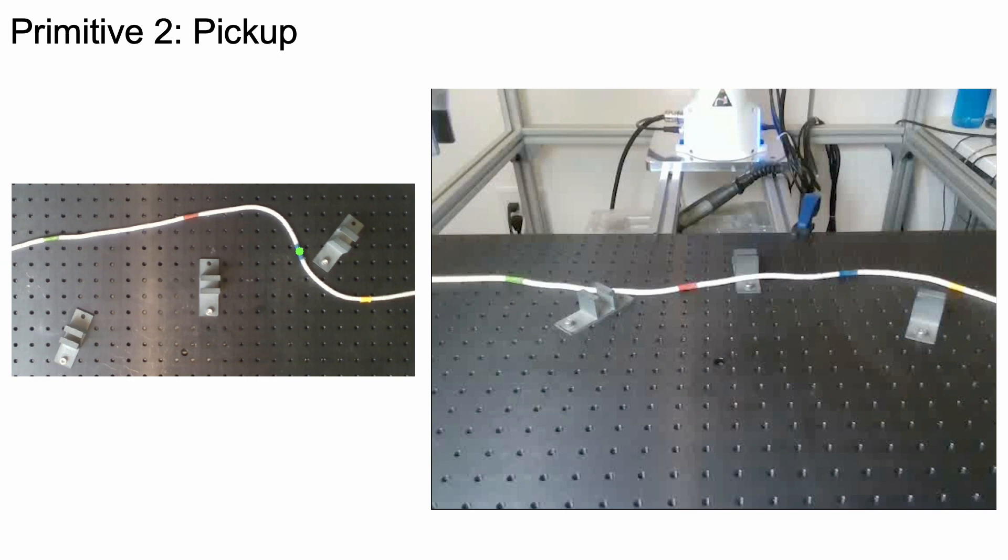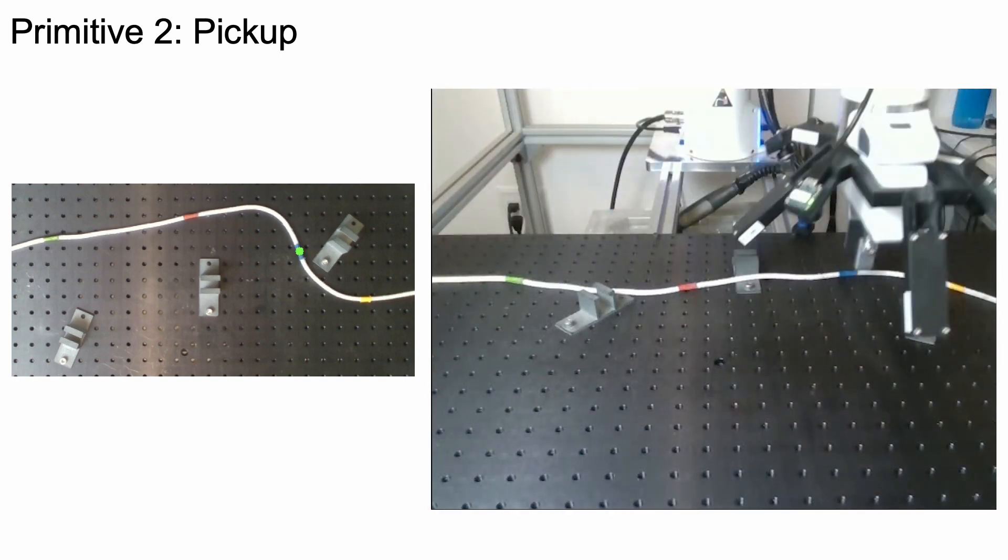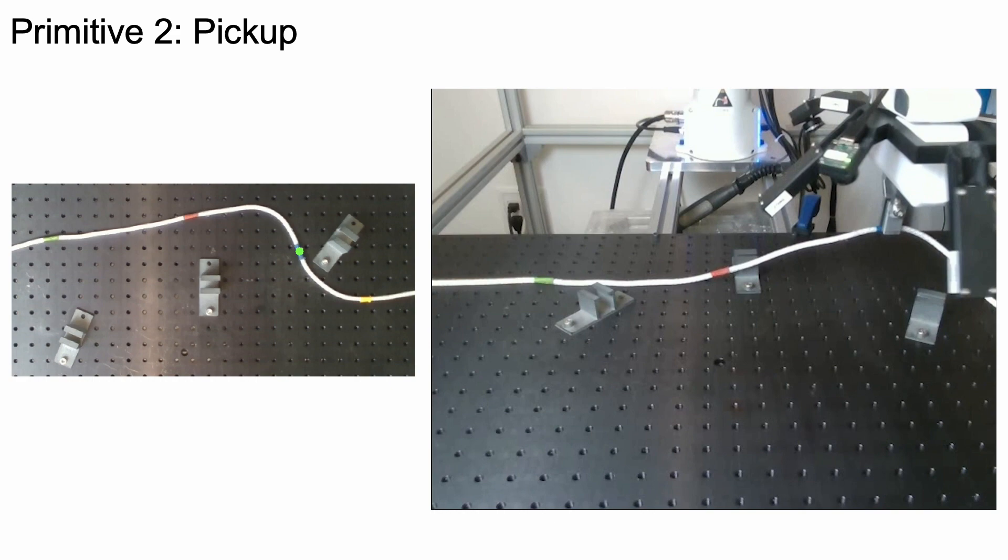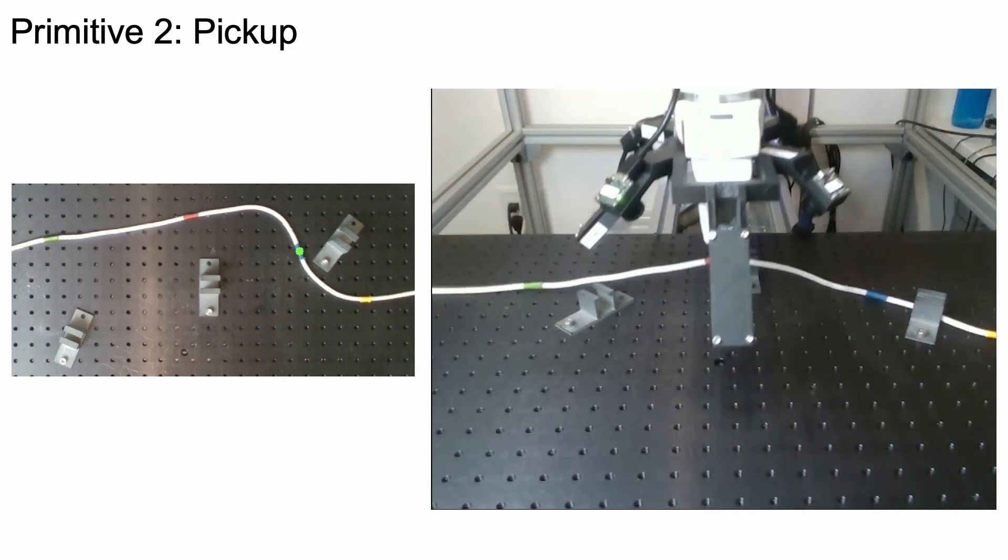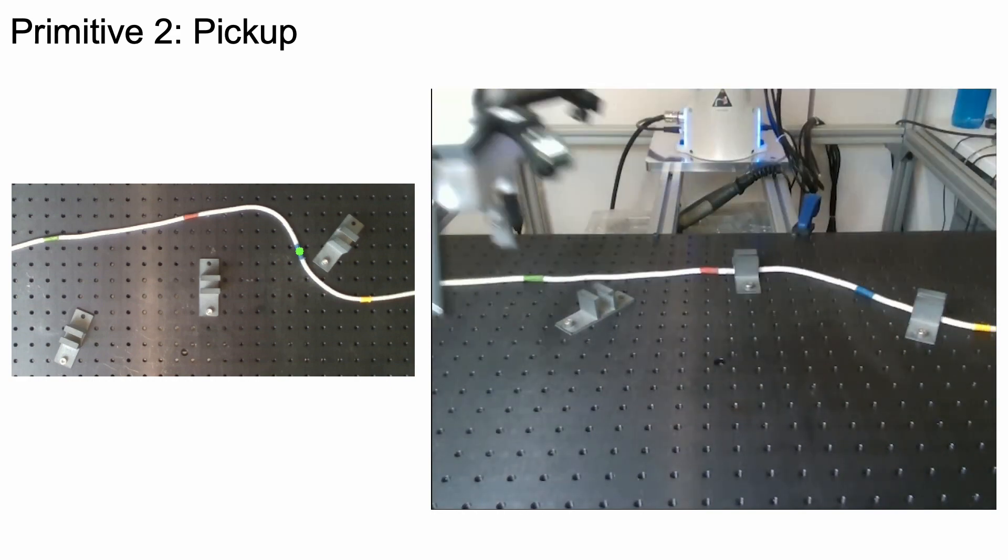Our primitive library also comprises three other scripted primitives to assist the robot in completing the task. Pickup uses image segmentation from the top camera view to determine a grasping point on the cable and hold it within the robot grippers.